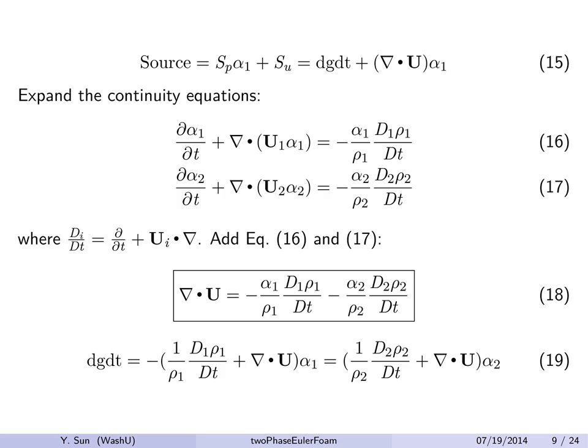We manipulate the continuity equation, separate alpha and density, and this is the source term. dgdt must be this source term minus the divergence term. That's how it is defined. But why do we do that? What does dgdt mean? If we do some combination between these two equations, we add them together. The first two terms add to zero because alpha-1 plus alpha-2 is constant. U1 alpha-1 plus U2 alpha-2 is the combined flux, combined velocity. The left-hand side is the divergence of velocity. This is the equation that is used to construct pressure equation. This is the combined continuity equation. It's actually very important.